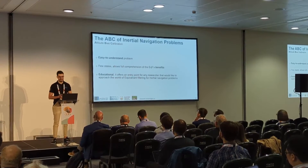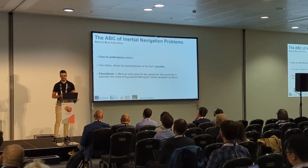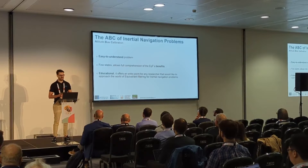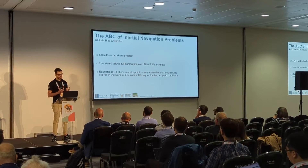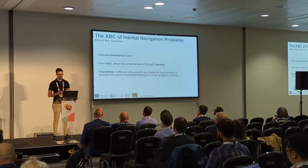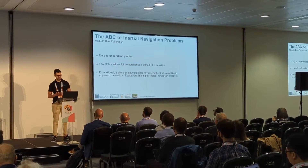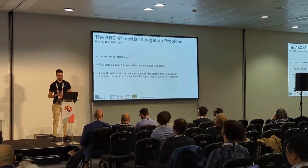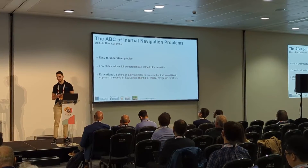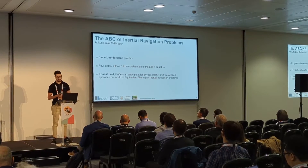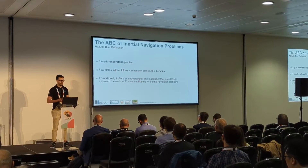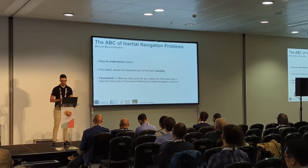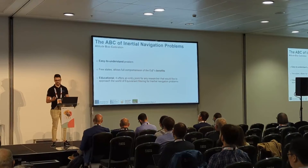The problem is that the mathematics behind the equivariant filter seems complicated, and many people report that it's hard to understand. So with this research, we want to focus on a very easy to understand problem with simple mathematics that results in a simple filter, but still shows the benefits and the power that come from equivariant filters. For this reason we focus on what we call the ABC of inertial navigation problems — the first and easiest problem we could think of — because it stands for Attitude, Bias, and Calibration.